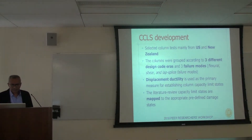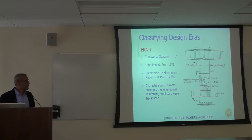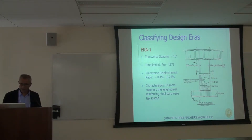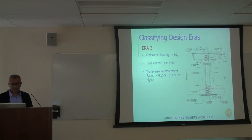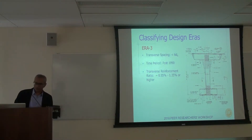Based on the literature review, they came up with limit states and mapped them onto predefined damage states. What Caltrans did was take typical drawings of some of these bridges and classify them into eras based on the transverse reinforcement spacing, the amount of transverse reinforcement, and in some cases lap splices at the base. Era two — post-San Fernando but pre-Loma Prieta — shows more transverse reinforcement. Era three, the modern era, features much more well-detailed columns with a lot more transverse reinforcement. These are the three broad groups, and we also had three or four different failure modes.